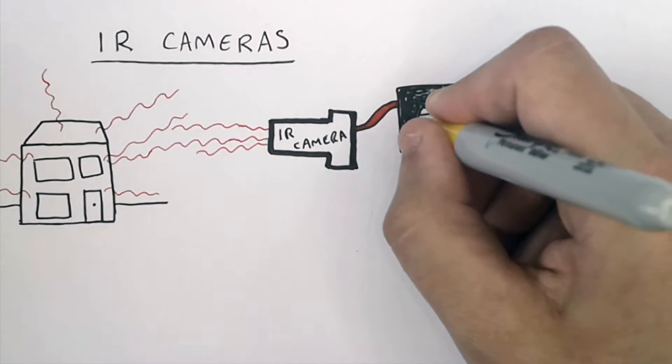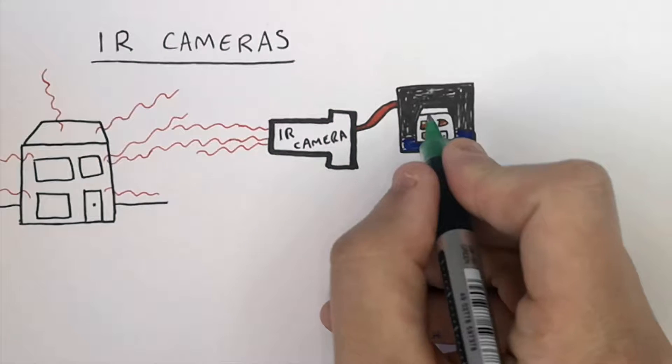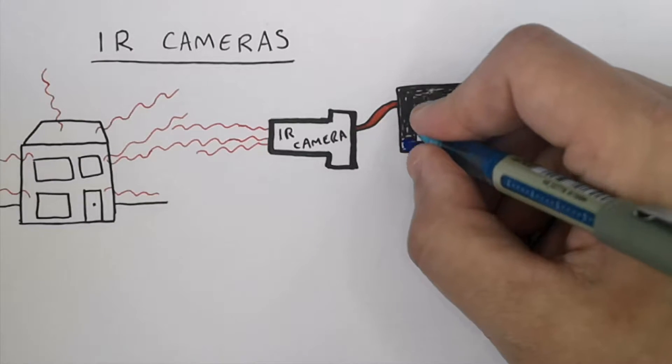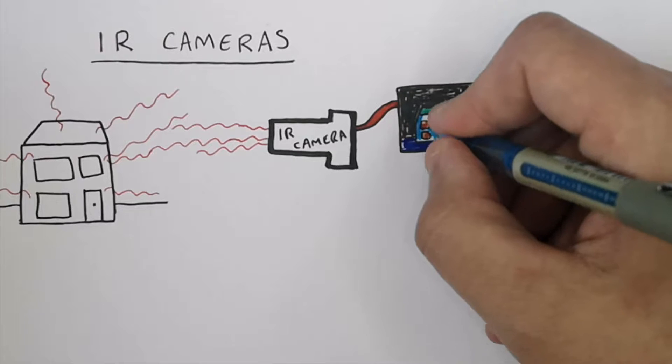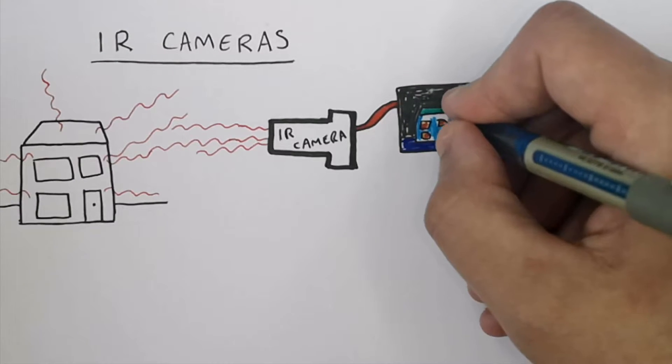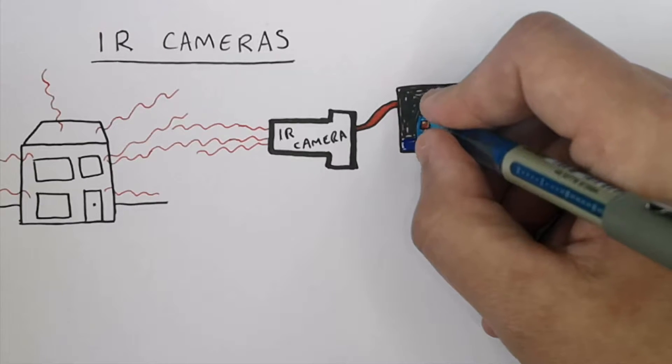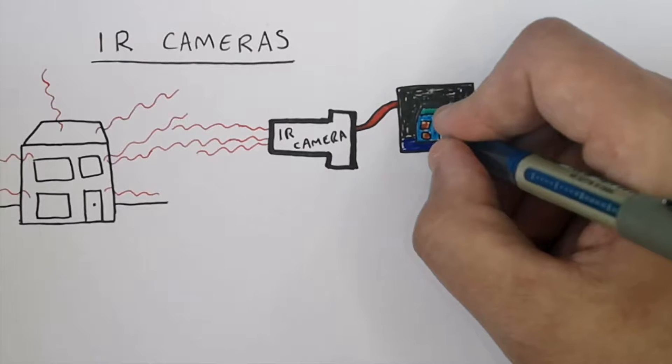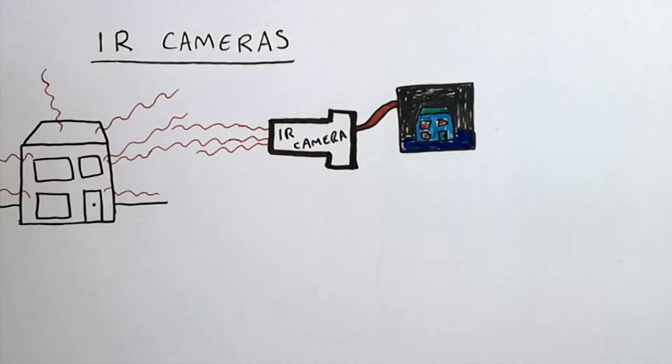The warmer the color appears on the image, that is where you're going to see a higher level of infrared radiation being emitted. Green is going to be emitting more infrared radiation than blue, so the roof is emitting more infrared radiation than the walls.